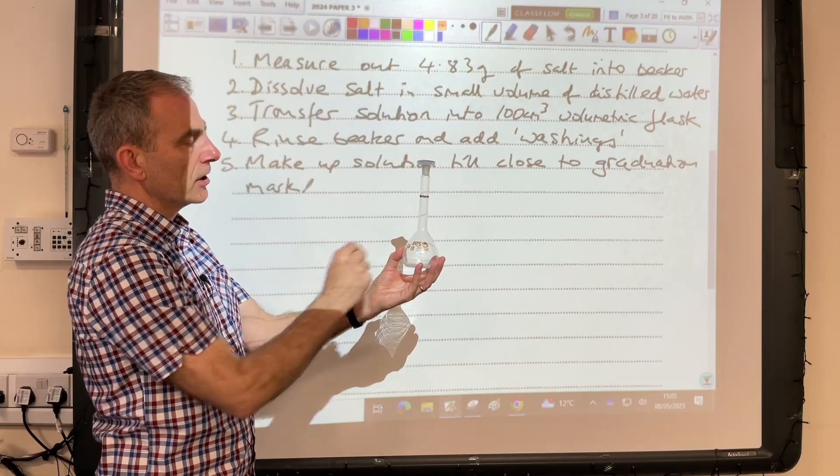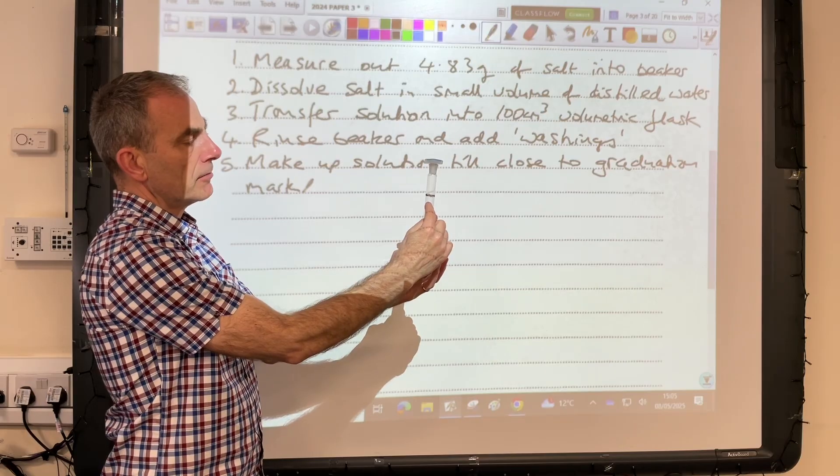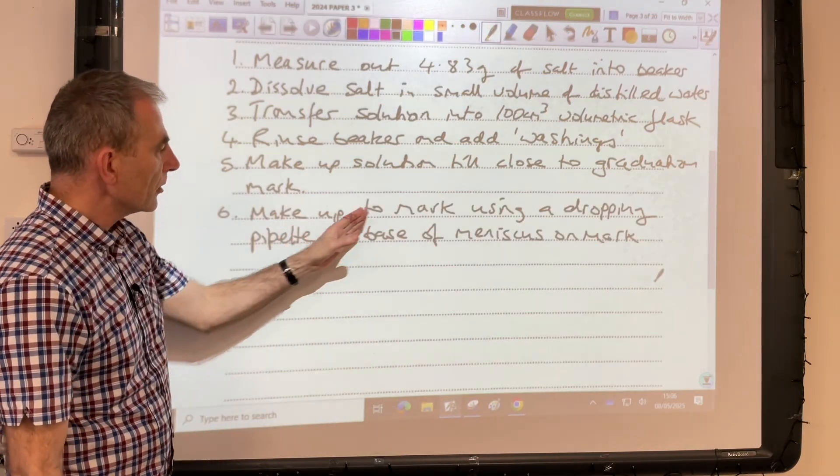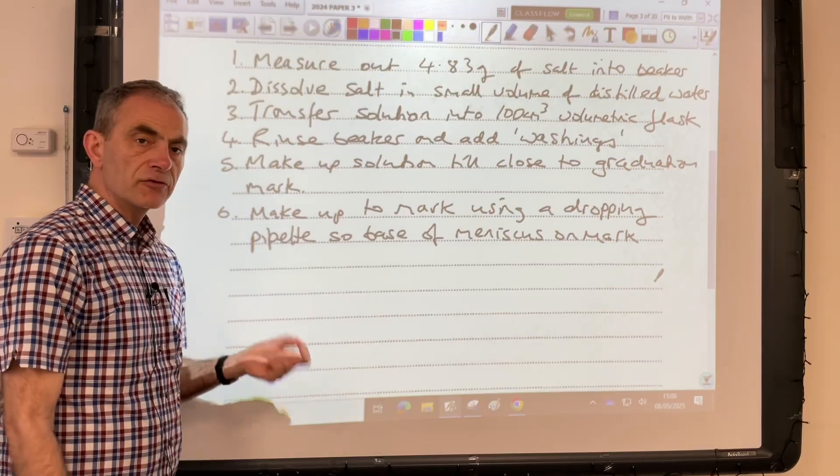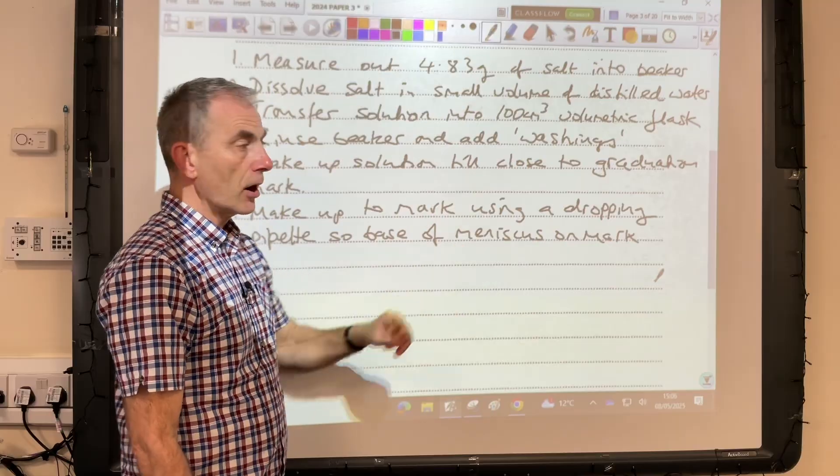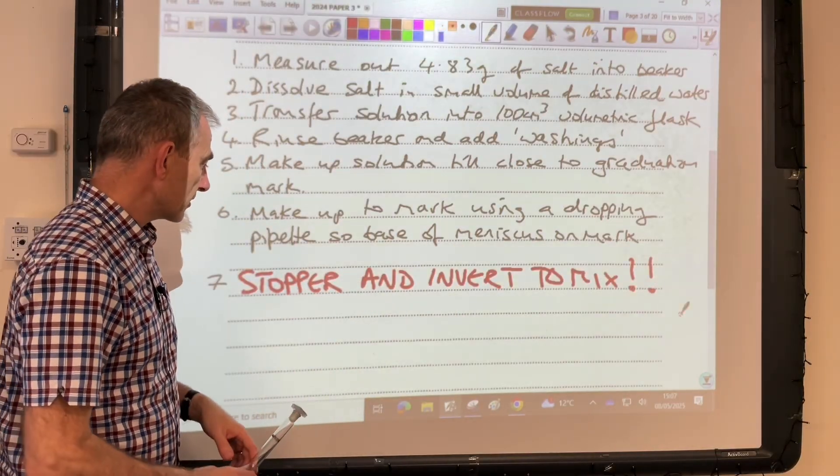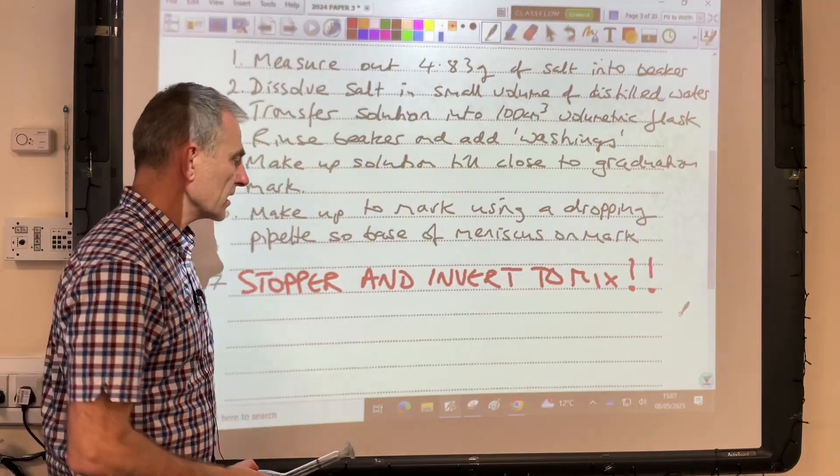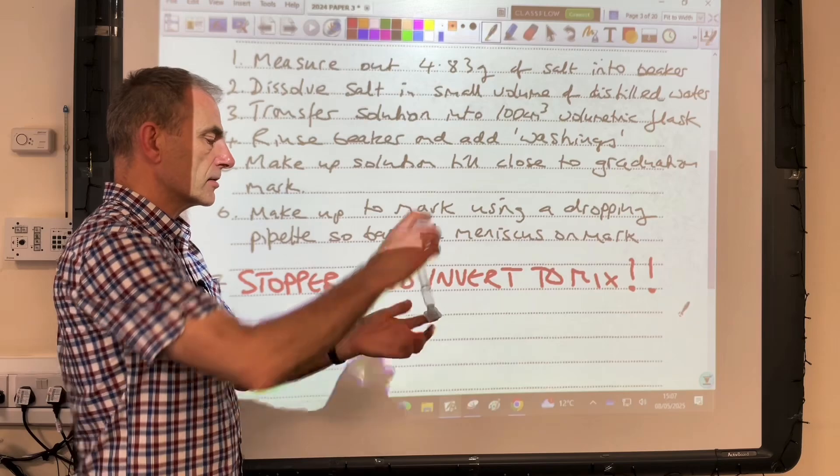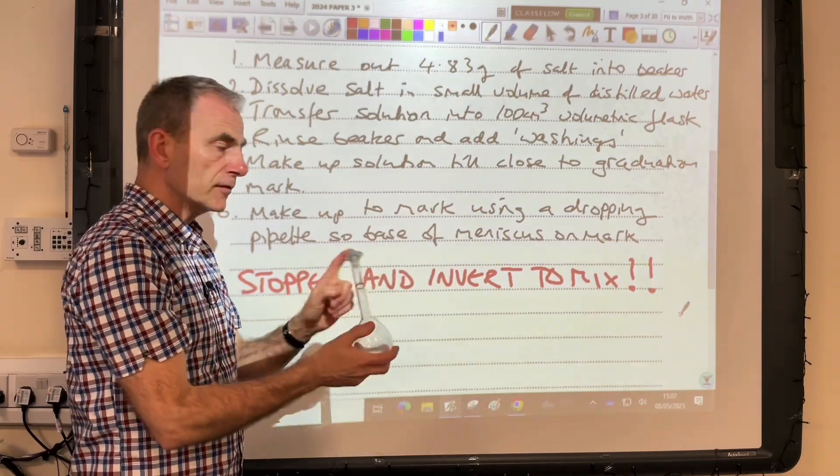So you'd go up to, let's say, about a centimeter down from the graduation mark, and then for that final cm³ or so you would make up to the mark using a dropping pipette. You want the base of the meniscus to be on the mark. And then the last thing you need to say—and I've done it in red capitals because people often forget to say it—is you need a stopper. So put the stopper in the volumetric flask and invert to mix the solution together. Don't forget to say that.